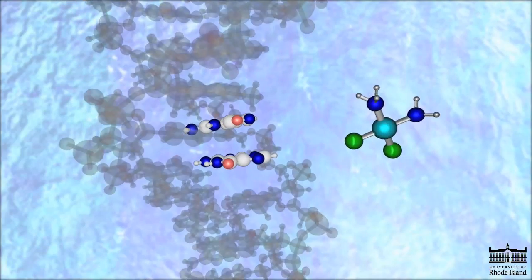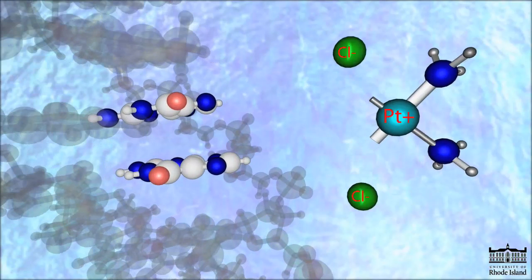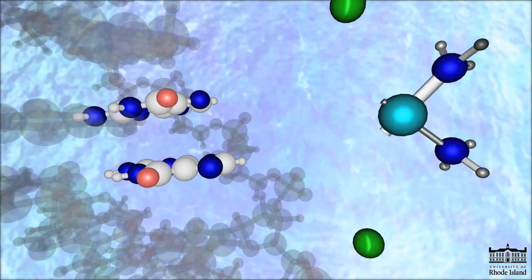The molecule loses its chlorine atoms in exchange for the nitrogen atoms of the target guanines. Cisplatin can bond more tightly with nitrogen because nitrogen balances the platinum charge more effectively than chlorine.